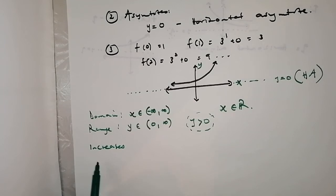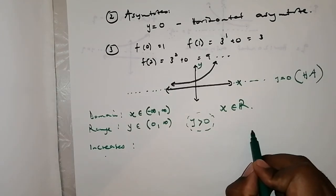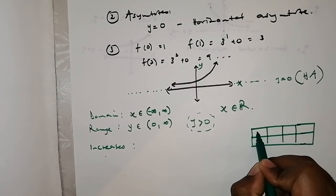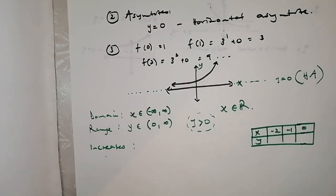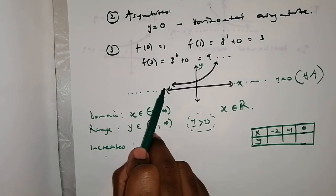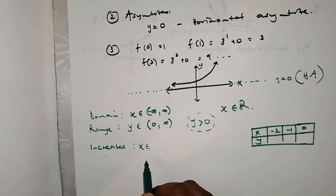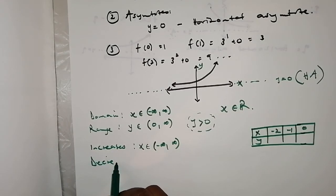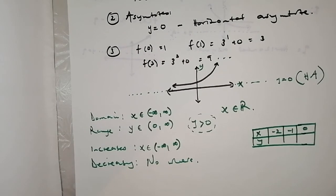Where is the function increasing or decreasing? Looking at the graph, the function is increasing everywhere — from x ∈ (−∞, +∞). Using a table of values can help you appreciate this: you'll see the y-values grow as x grows. This function is not decreasing anywhere — it is not applicable.